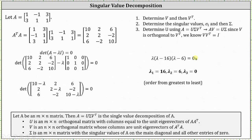Giving the eigenvalues from greatest to least: lambda sub one equals 16, lambda sub two equals six, and lambda sub three equals zero. The next step is to find the corresponding unit eigenvectors, which will give us the columns of matrix V, and then we can find V transpose.